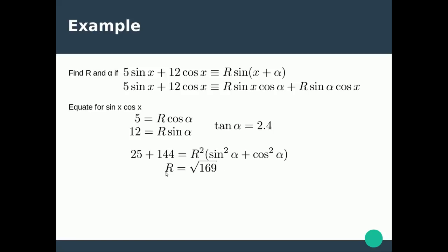So now we know the value of R which is 13, and the value of alpha which is tan to the minus 1 of 2.4, we can rewrite this so we get the answer that 5 sin x plus 12 cos x is equivalent to 13 sin x plus 1.18, where tan to the minus 1 of 2.4 in radians is 1.18.